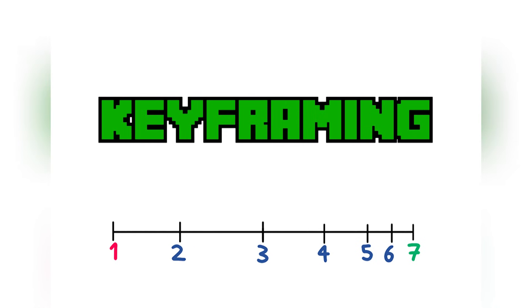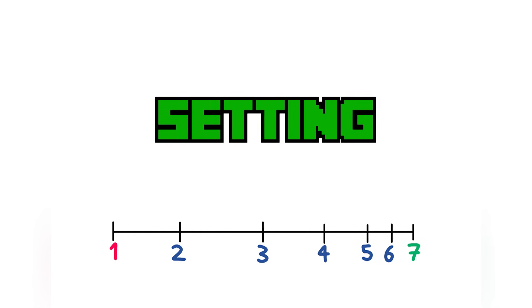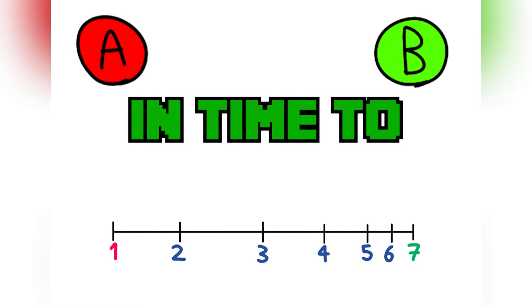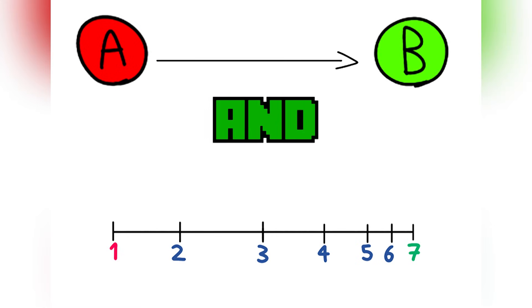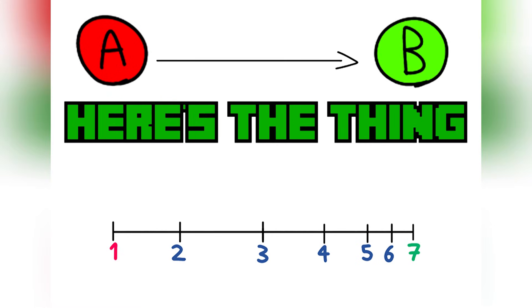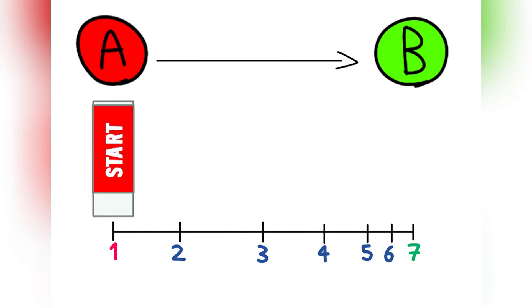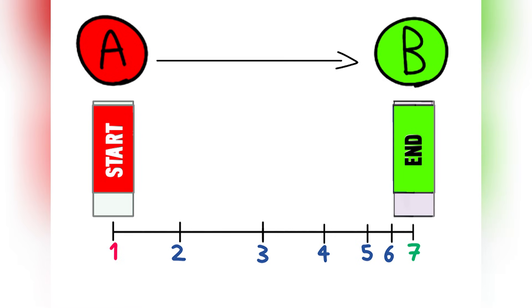Keyframing is all about setting markers in time to define how things move and change. Pick the thing you want to animate — its position, size, and color. Drop the keyframes at the start and end, then watch your creation flow between these points.